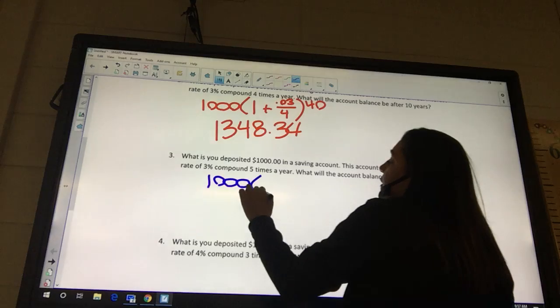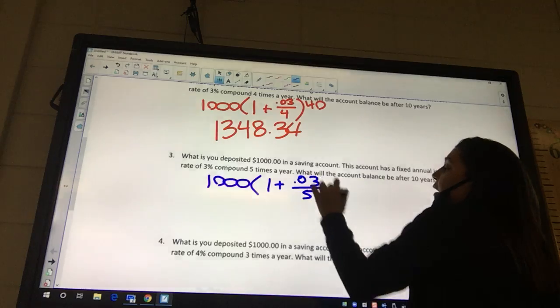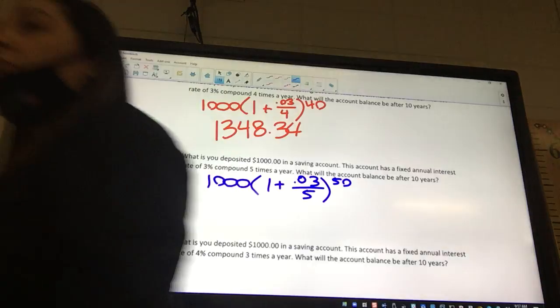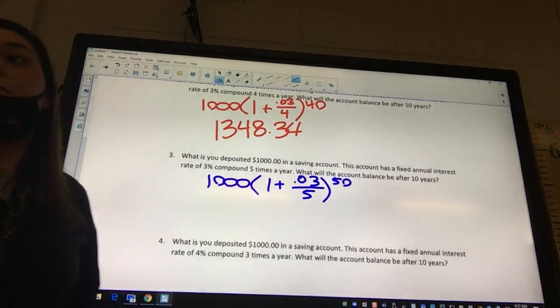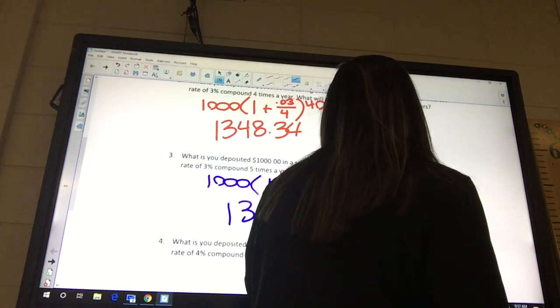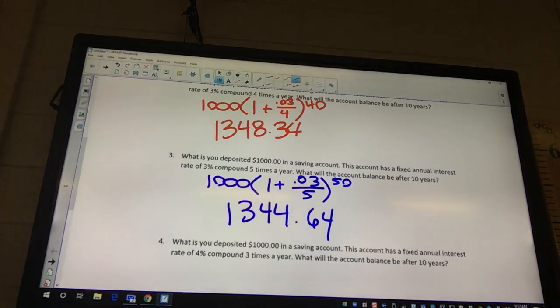So this one, we still did $1000. We said 1 plus it's still 3% over 5 times a year. They checked it 5 times every year, and you're gonna have 50 on the outside. Okay, what do you get when you check it 5 times a year? Okay, $1344.64. Why did it go down?